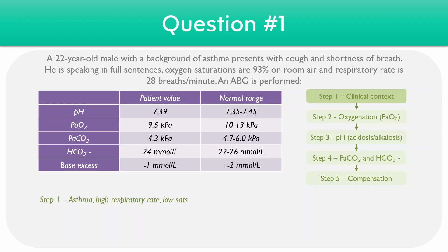Moving on to step two, we can have a look at the oxygen levels — the PaO2 value — and you can see that it's 9.5, so the patient is slightly hypoxic, but there's no significant respiratory failure.